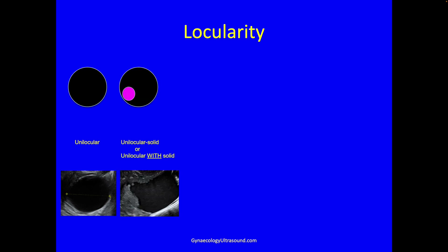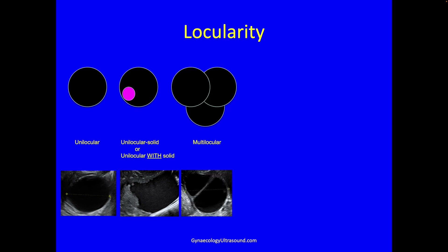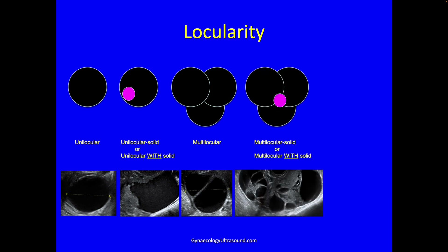Locularity. This is a unilocular cyst — a single locule with no solid component. If there is a solid component it's called unilocular solid or unilocular with solid. This cyst has more than one locule so it's called a multilocular cyst with no solid component. A multilocular solid has more than one locule and a solid component.